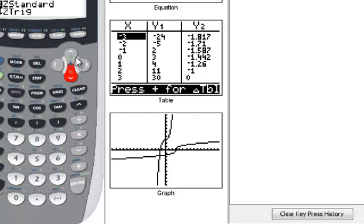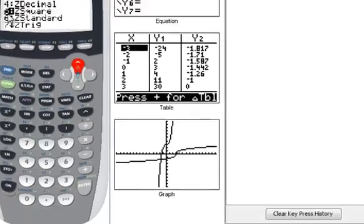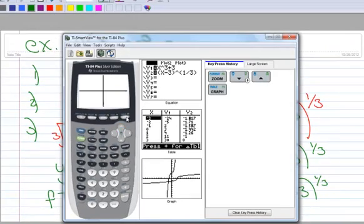So if you notice your calculator, it's wider than it is taller. So when you graph it, it kind of distorts your axes a little bit. When you do a zoom 5, though, it squares up your axes. So you get a true square look.